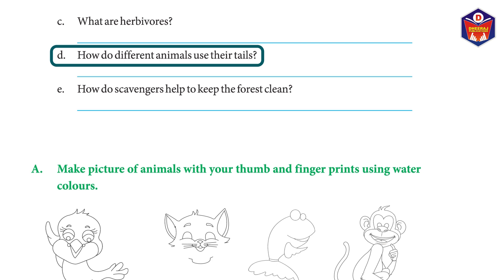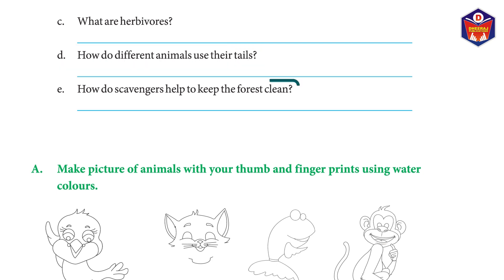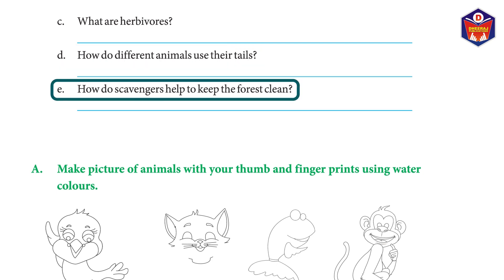How do different animals use their tails? (1) A fish uses its tail for swimming and changing direction. (2) A peacock uses its tail to dance. (3) Cows and buffaloes use their tails to fly away birds and insects. (4) A dog uses its tail when it is happy or scared. How do scavengers help keep the forest clean? Scavengers eat the flesh of dead animals; in this way, they clean the forests.